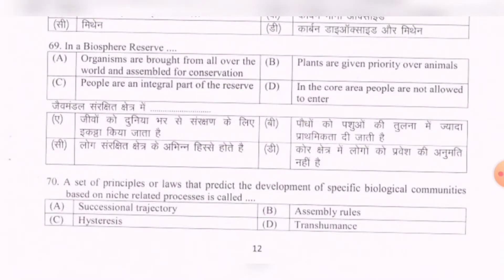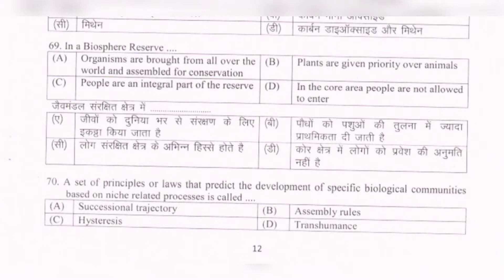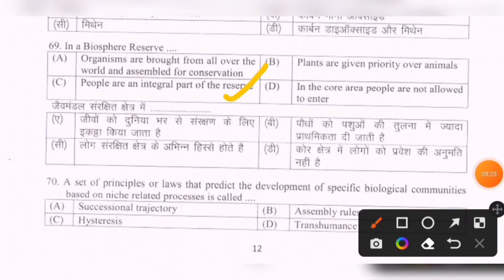Next question: In a biosphere reserve — options are: organisms are brought from all over the world and assembled for conservation; plants are given priority over animals; people are an integral part of the reserve; in the core area people are not allowed to enter. The correct option is C — people are an integral part of the reserve.